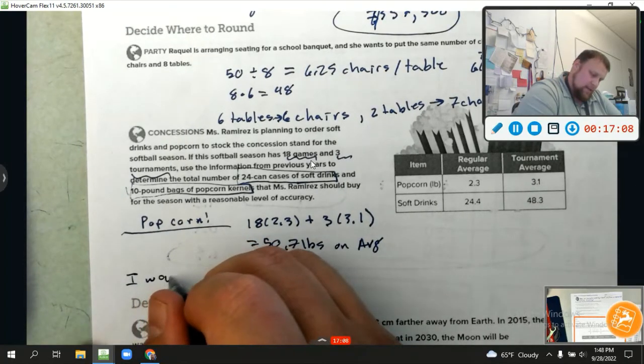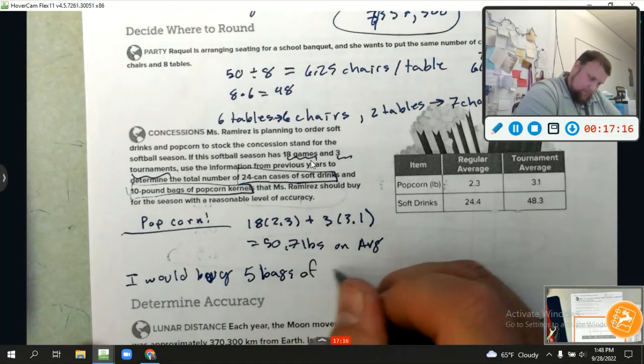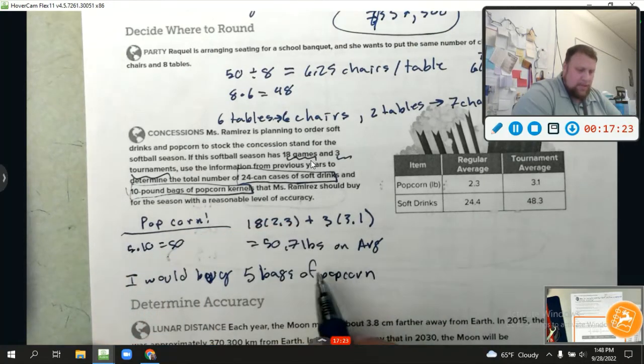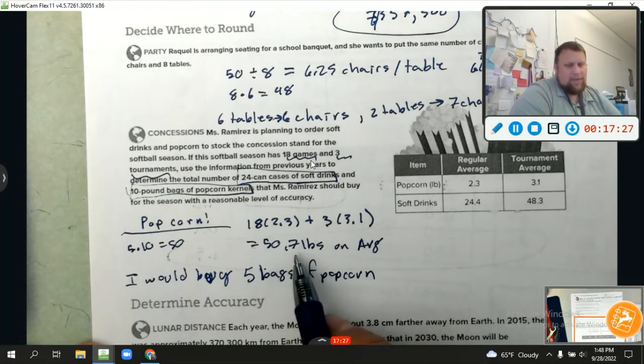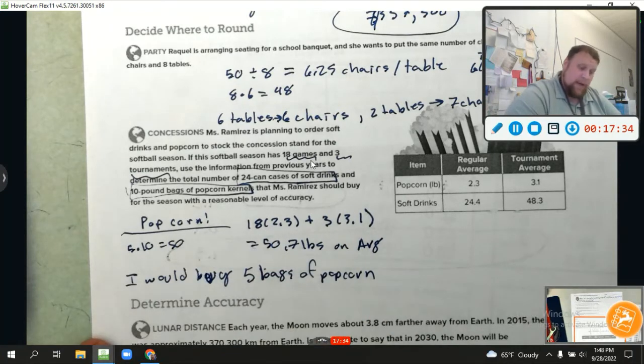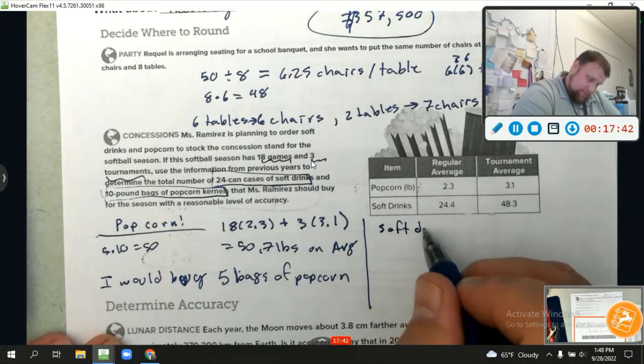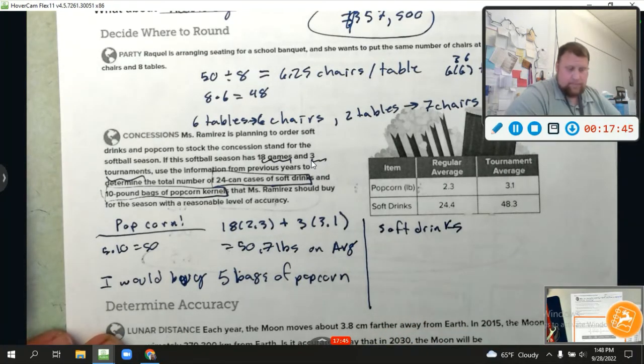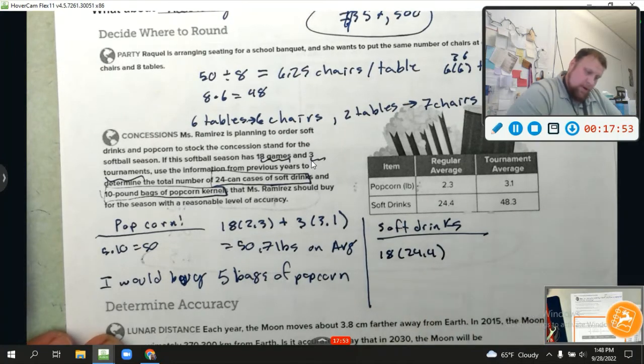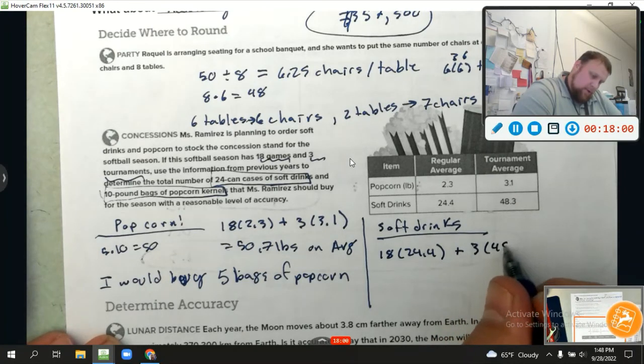Now, let's go ahead and look at soft drinks. Okay. So again, I know there are 18 games and about 24.4 soft drinks we drink per game. We're going to add to that the three tournaments times about 48.3 lots of soda during the tournaments per tournament. Okay. So let's do this. That's 18 times 24.4 plus 3 times 48.3. That doesn't look like a point, does it? Is that better, 48.3? That equals 584.1 soft drinks.